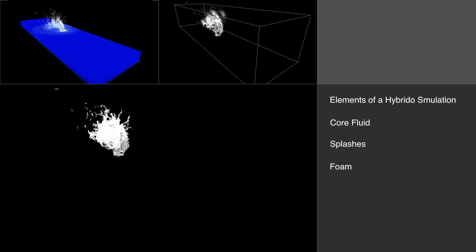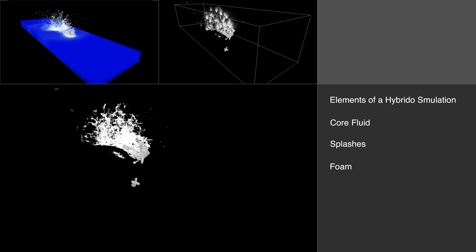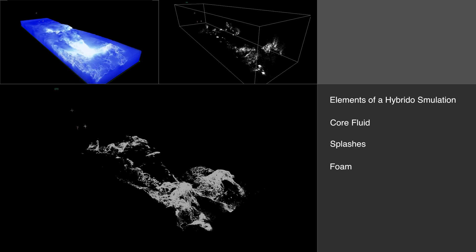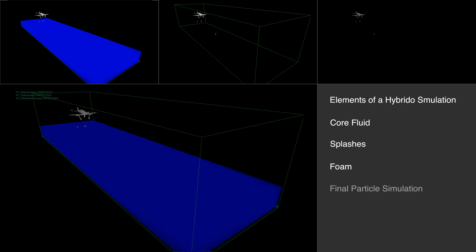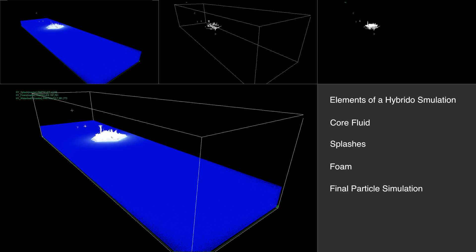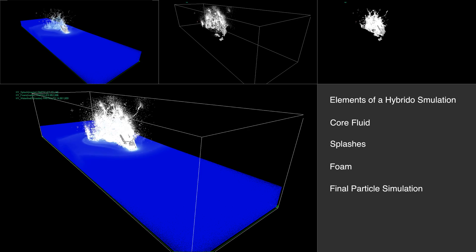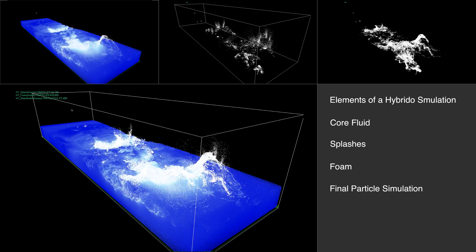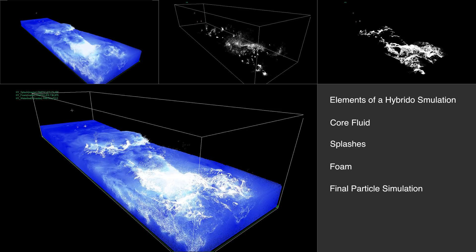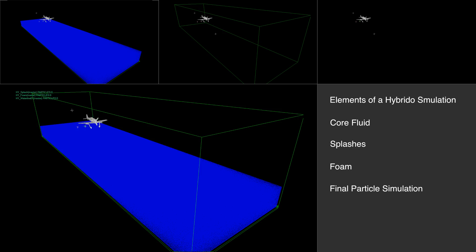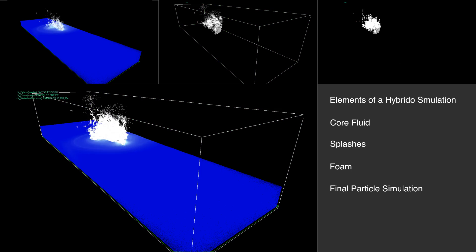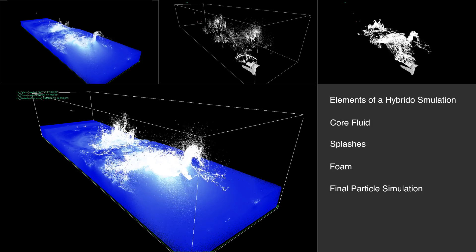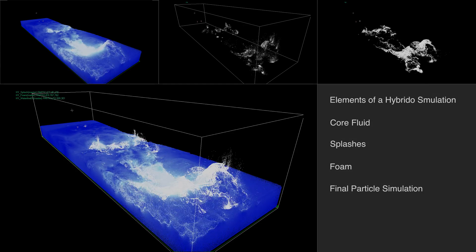The advantage of this split workflow is that you are able to focus on just one element of the simulation and fine-tune its final look while the already existing parts are left untouched. It is also possible to simulate some parts over a network. This applies for the creation of all secondary elements and meshes.